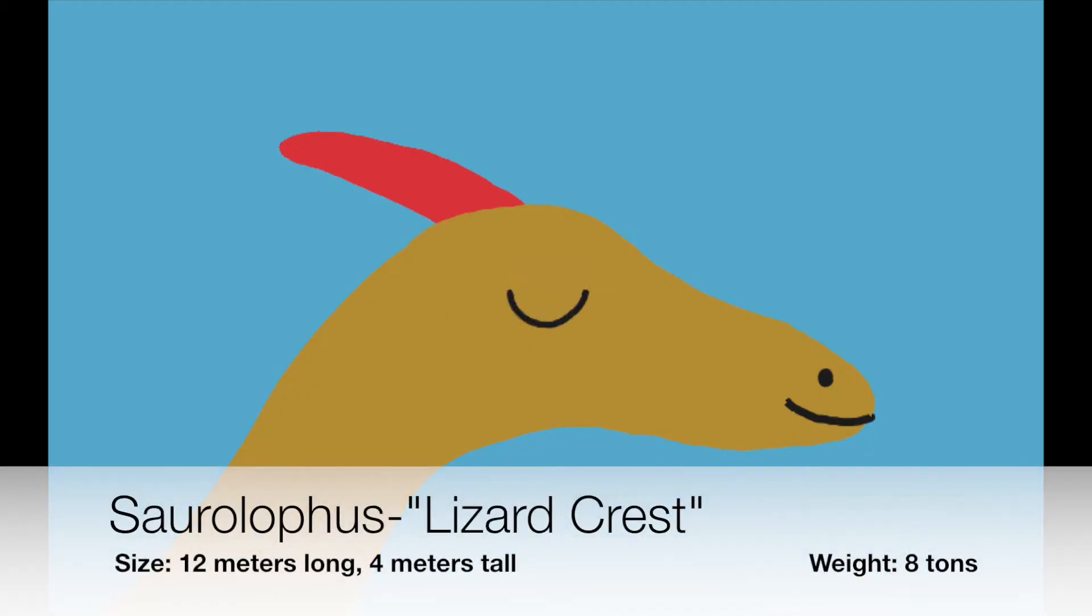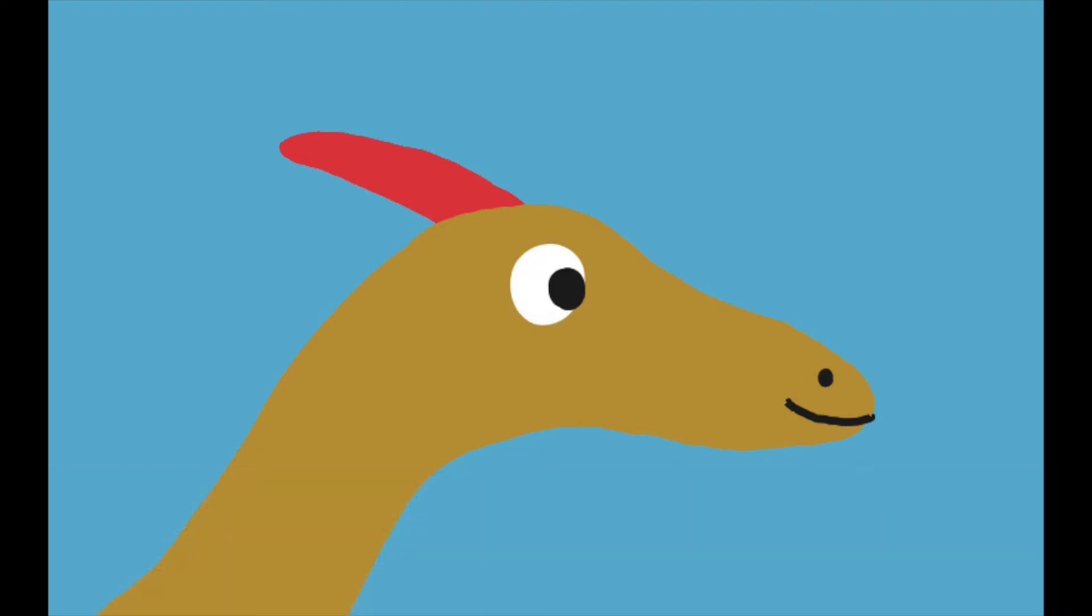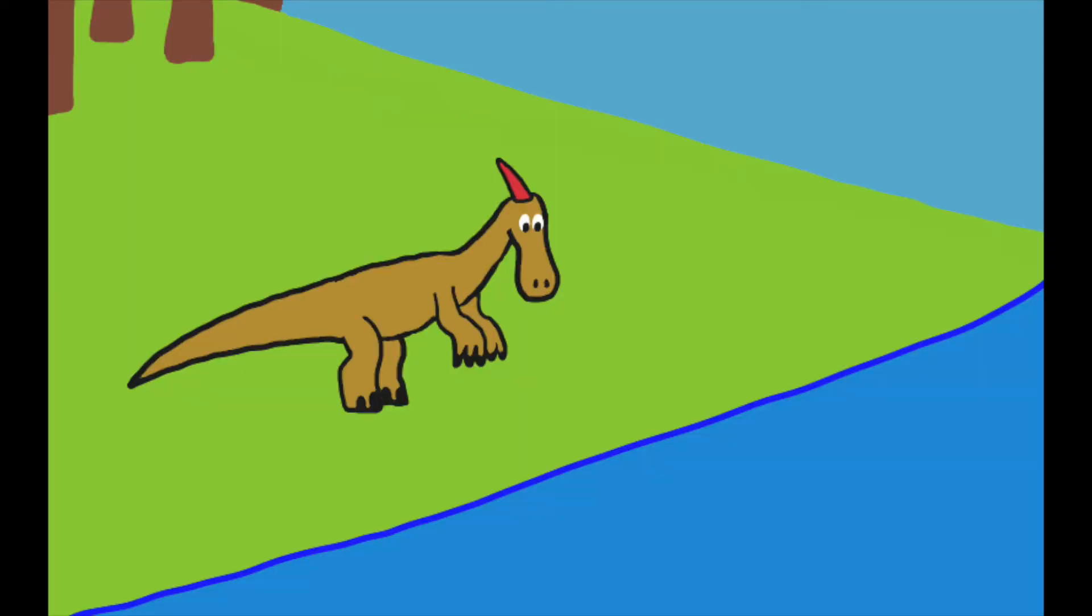Saurolophus has a name similar to Parasaurolophus minus the Para. God distinguished the Saurolophus family by creating a small, hollow, bony, spike-like crest on top of the head. Like other hadrosaurids, God gave the Saurolophus the capability to walk on all fours and to stand and run on two legs.